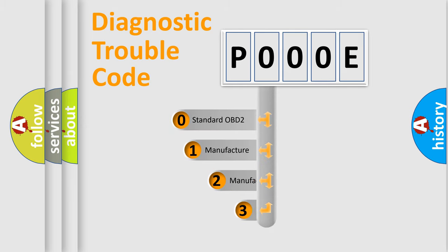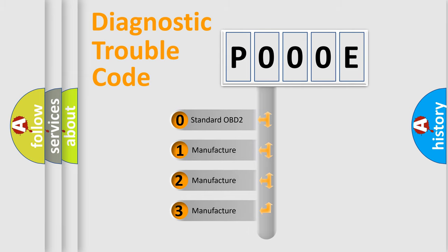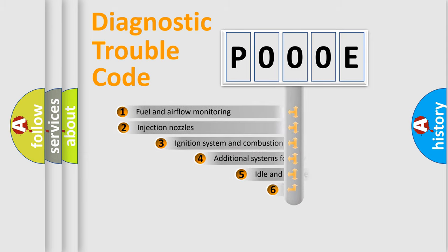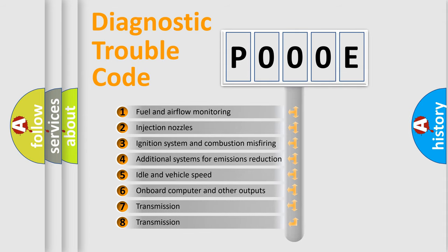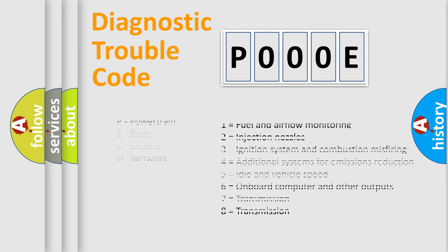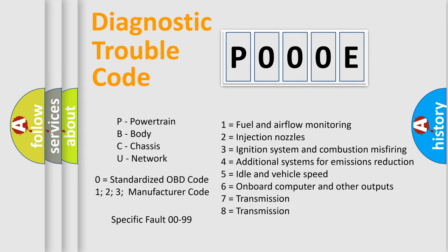If the second character is expressed as zero, it is a standardized error. In the case of numbers 1, 2, or 3, it is a manufacturer-specific error. The third character specifies a subset of errors. The distribution shown is valid only for the standardized DTC code. Only the last two characters define the specific fault of the group. Let's not forget that such a division is valid only if the second character code is expressed by the number zero.